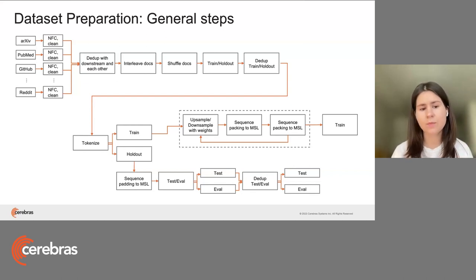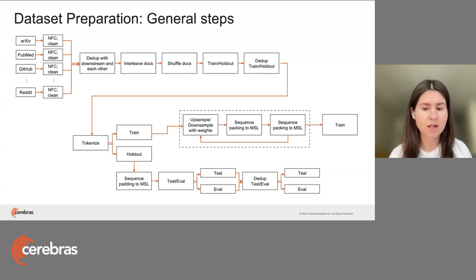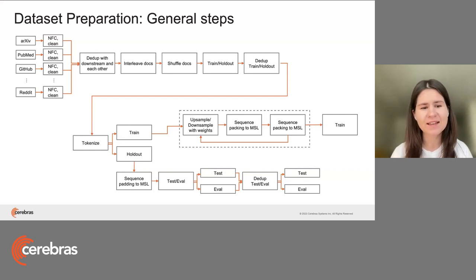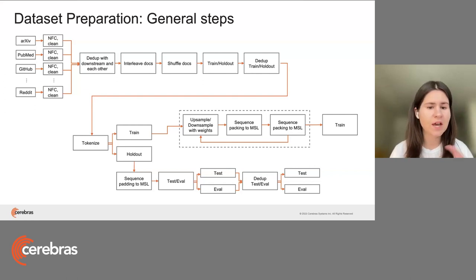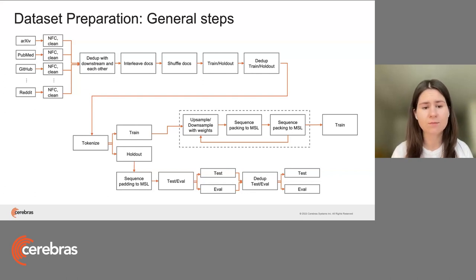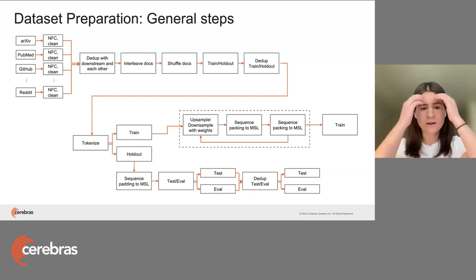This deduplication step is one of the hardest in the whole pipeline because deduplication itself is an N-squared task where N is the size of the dataset. If you have terabytes of data, that's not feasible naively. There are different implementations available — like MinHash LSH implementation or you can create SimHashes — approximate implementations that help you find duplicates with linear complexity instead of quadratic.